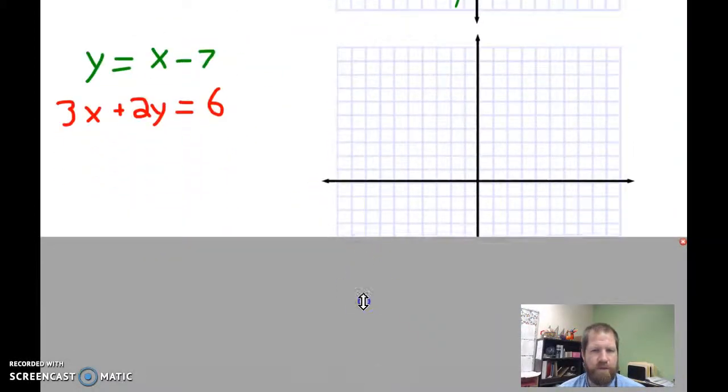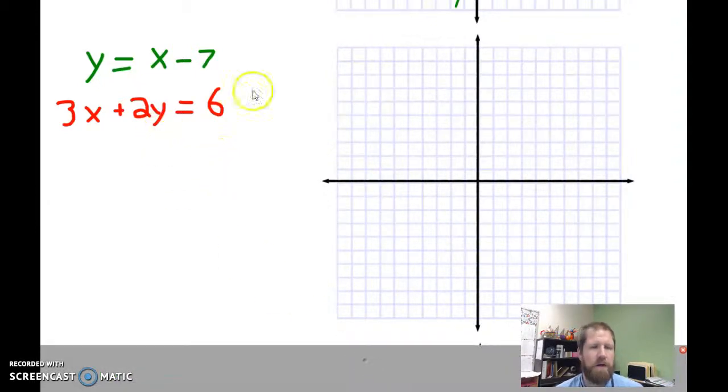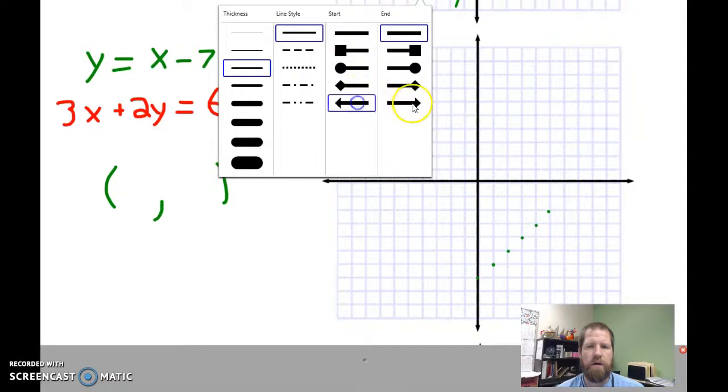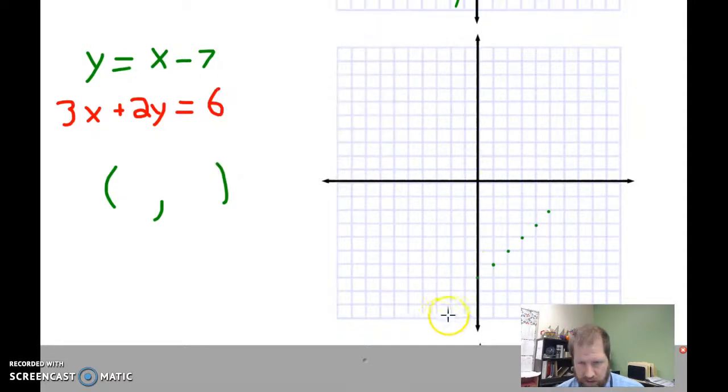Now let's look at another one. Here we have our system of equations - it's a system, so we're still looking for an ordered pair for our solution. Our first equation is in slope-intercept form. The y-intercept is negative 7, and our slope is 1, so it's going to be up 1 over 1.